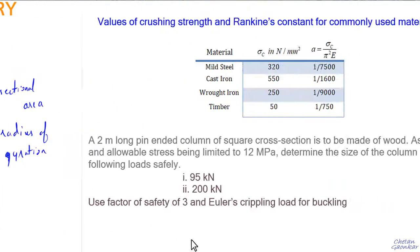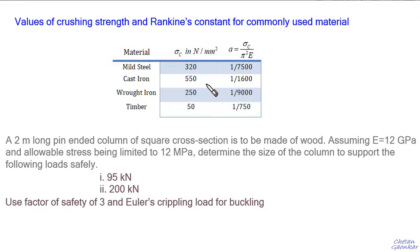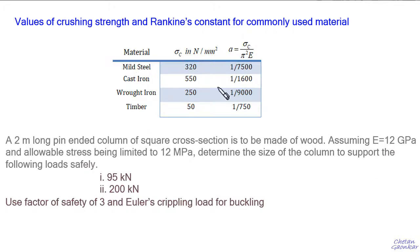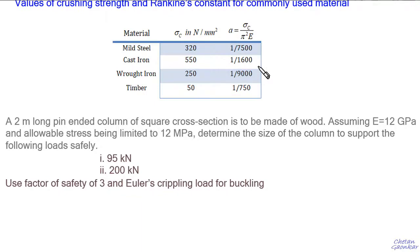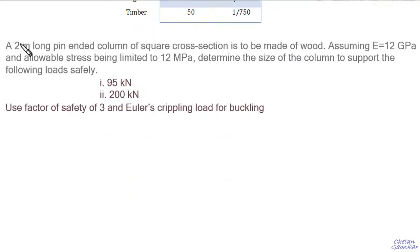Values of Rankine's constant a for different materials are as follows. For mild steel, σ_c ≈ 320 MPa, giving a = 1/7500. For cast iron, σ_c ≈ 550 MPa, giving a = 1/1600. For wrought iron, σ_c ≈ 250 MPa, and for timber, σ_c ≈ 50 MPa — the crushing stress is very low. With these values and Rankine's modified formula along with Euler's critical load formula, we shall solve some problems to understand these formulas in detail.